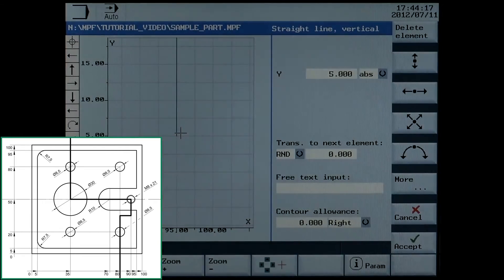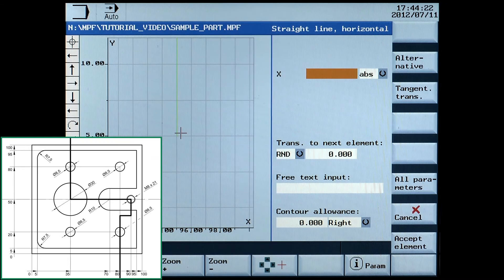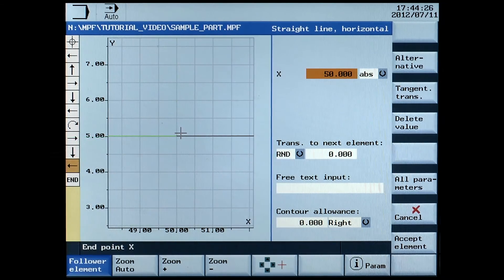Next is a horizontal line. Enter X50 absolute to close the contour. Accept element.